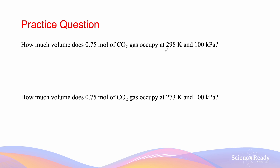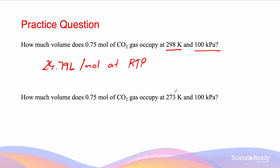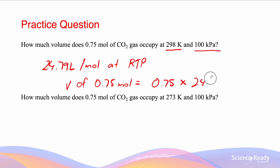The first question reads: how much volume does 0.75 moles of CO2 gas occupy at 298 Kelvin and 100 kPa? When approaching these questions, we need to immediately recognize that the conditions are RTP — 298 Kelvin and 100 kPa. The molar volume of gas is given on your data sheet as 24.79 liters per mole at RTP. So the volume of 0.75 moles is 0.75 multiplied by 24.79, which gives us 19 liters to two significant figures.